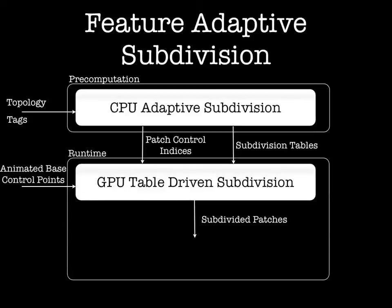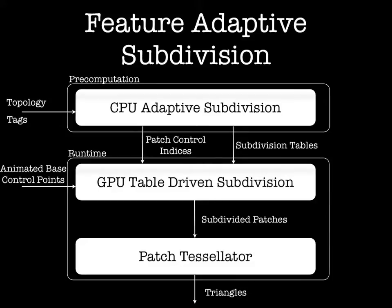Then, at runtime, we send the animated base control points to the GPU, which uses the pre-computed tables to efficiently compute the subdivided patches. Finally, the patches are sent to the tessellator, which produces the output triangles.